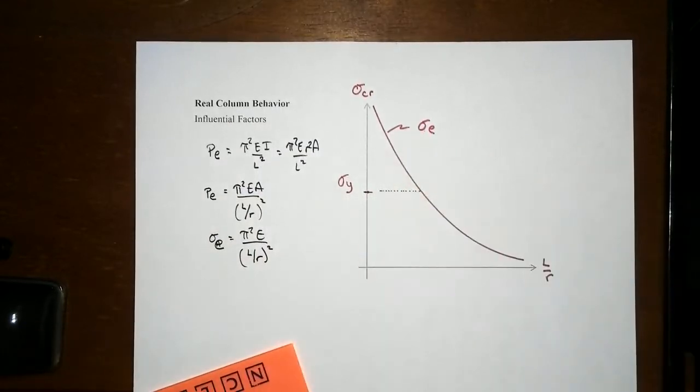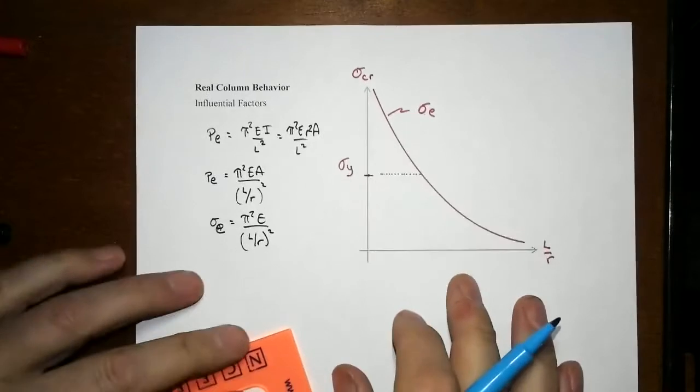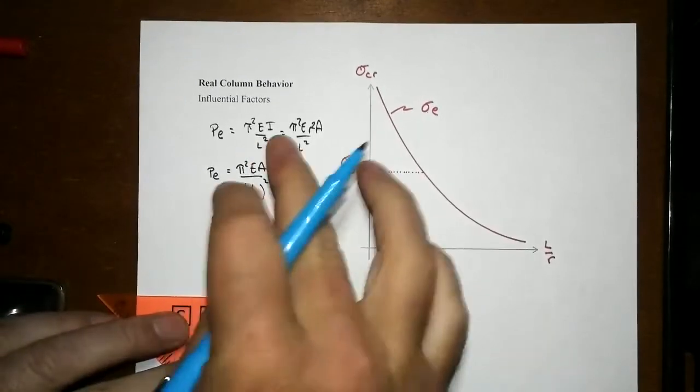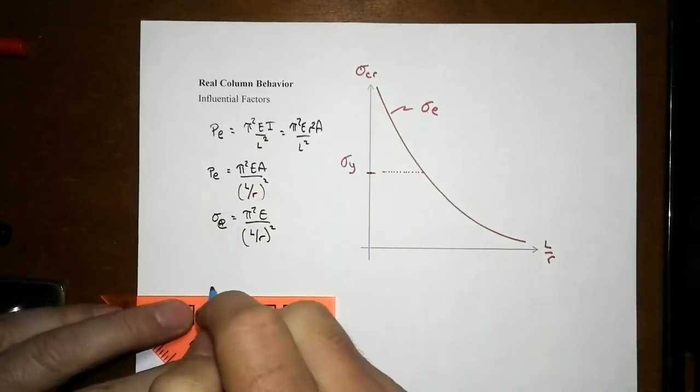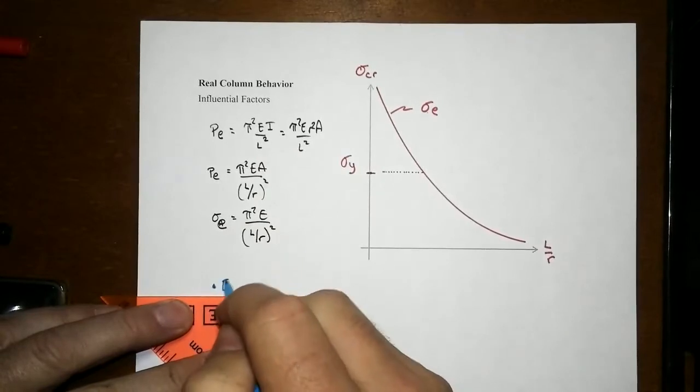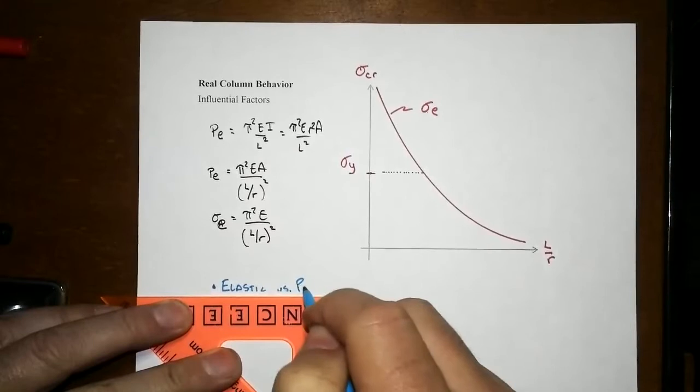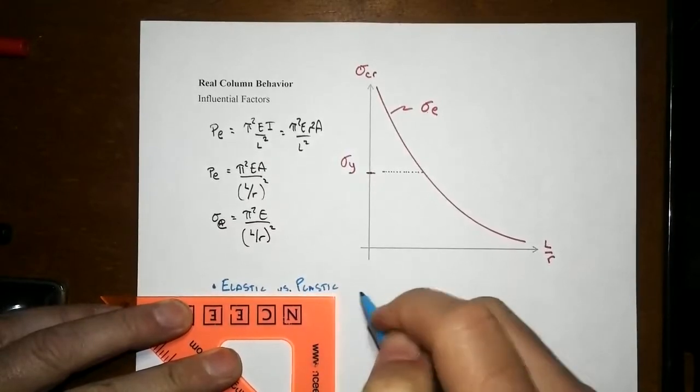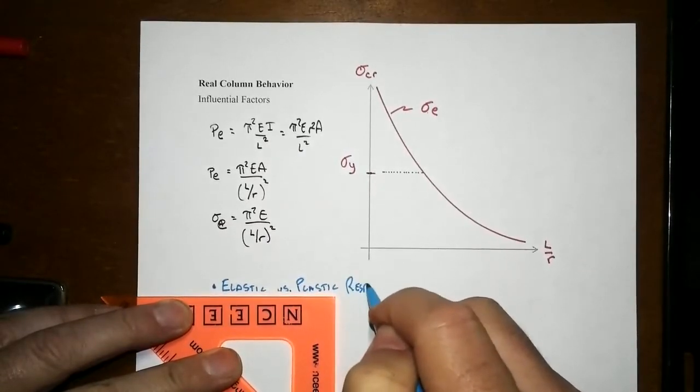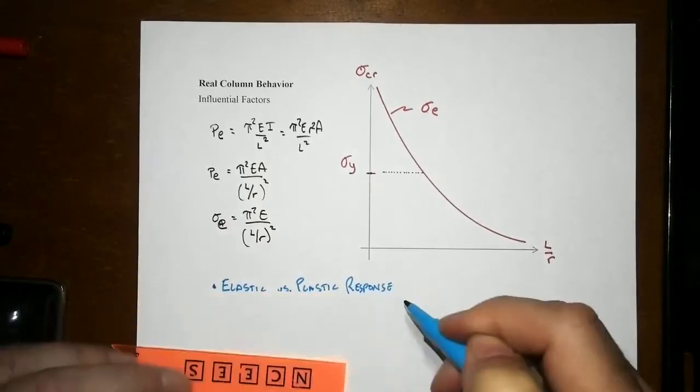There are some influential factors here that mean the real column is going to behave differently than this theory from the elastic model. The first one: we have elastic versus plastic behavior or response.